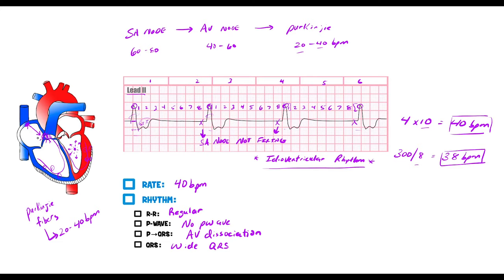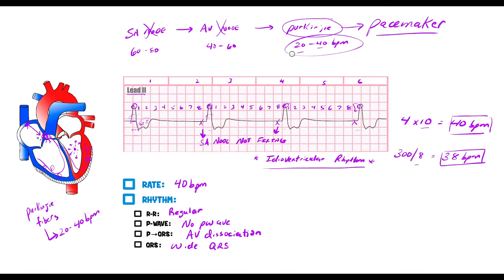So that is how we determine an idioventricular rhythm: the SA node is no longer working, the AV node is no longer working or not conducting potentials down to the ventricle properly, and the Purkinje system is now the pacemaker of the heart setting a rhythm at around 20 to 40 beats per minute — that's our idioventricular rhythm.